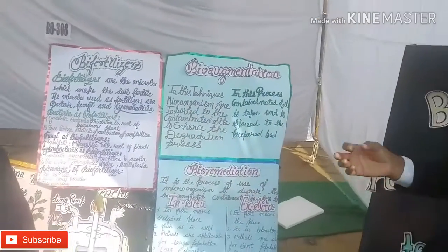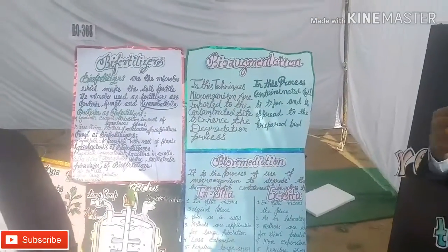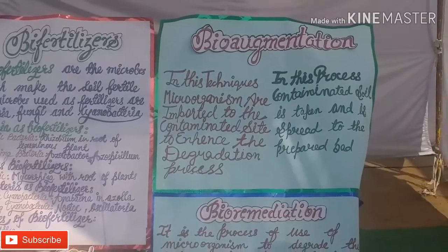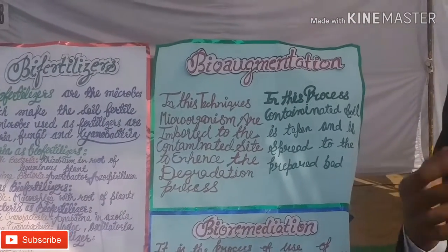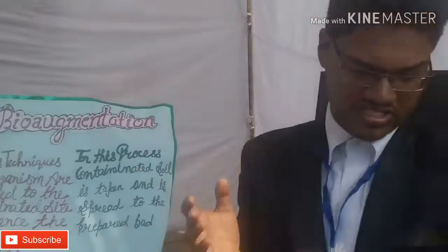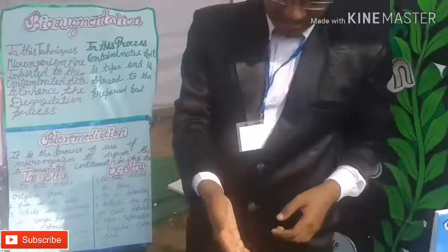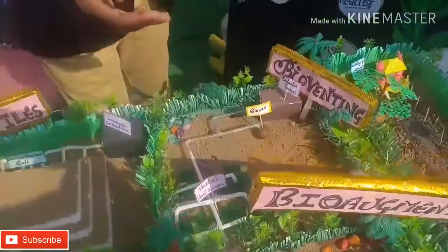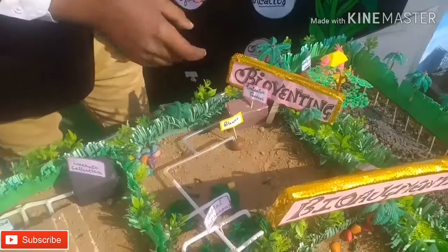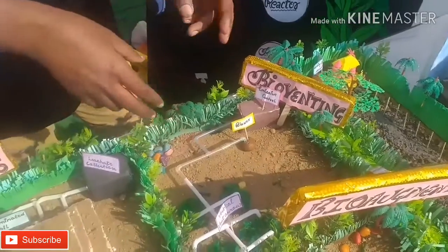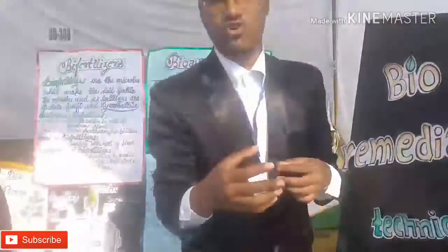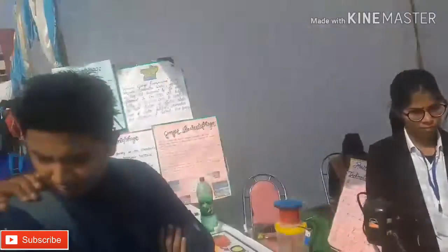In in-situ form, we treat the contaminant at the site only. In ex-situ form, we treat the contaminant in a lab or laboratory. So the first technique is bioventing. Here, we provide direct oxygen to the microbes present in the soil, so that microbes can grow and reduce the effect of pesticides in that area.